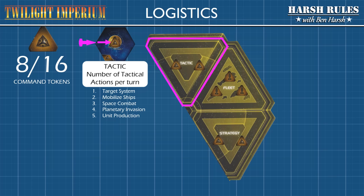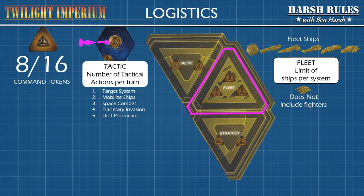When a player begins the game, he or she can conduct three tactical actions. Next, let's look at the Fleet space. The number of Command Tokens in the Fleet space limits the number of ships a player can maintain in a single system. Please note that fighter units do not count towards this limit.